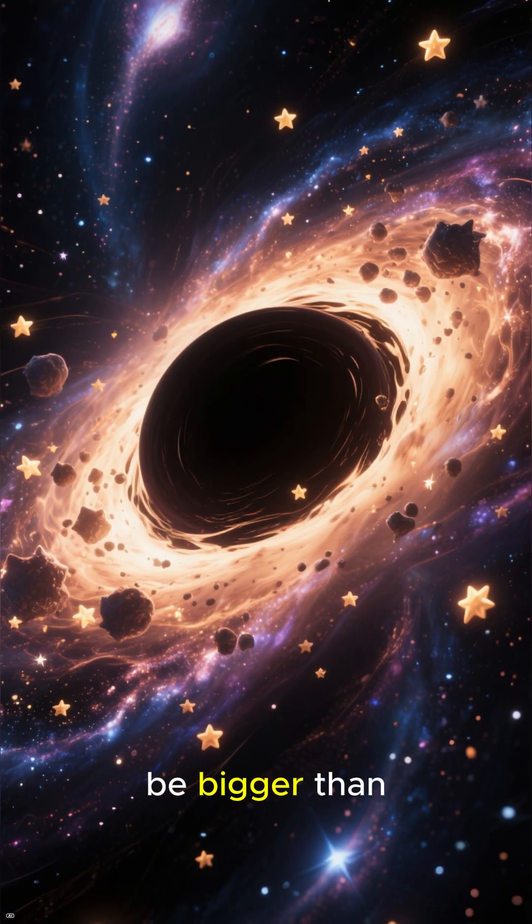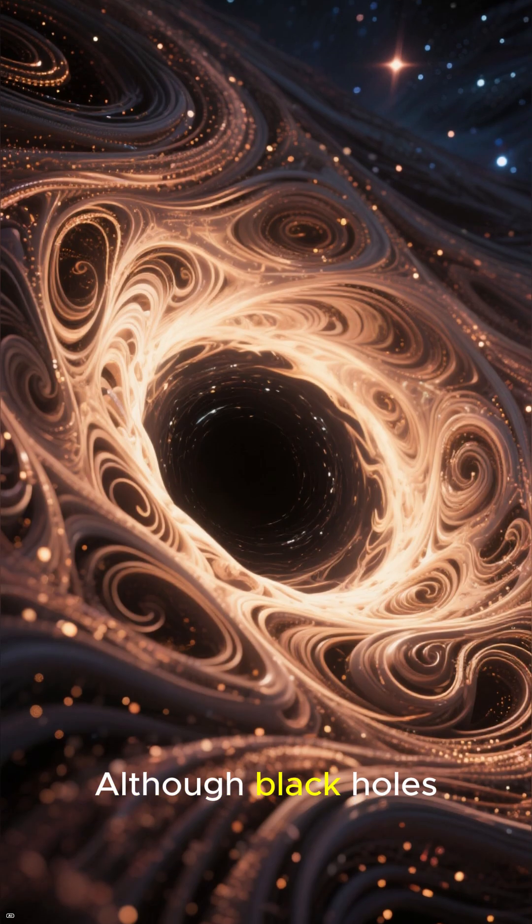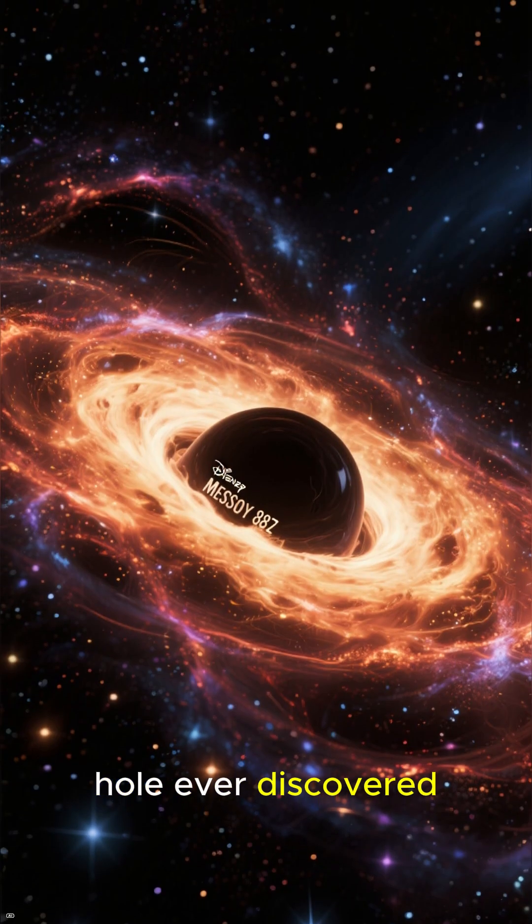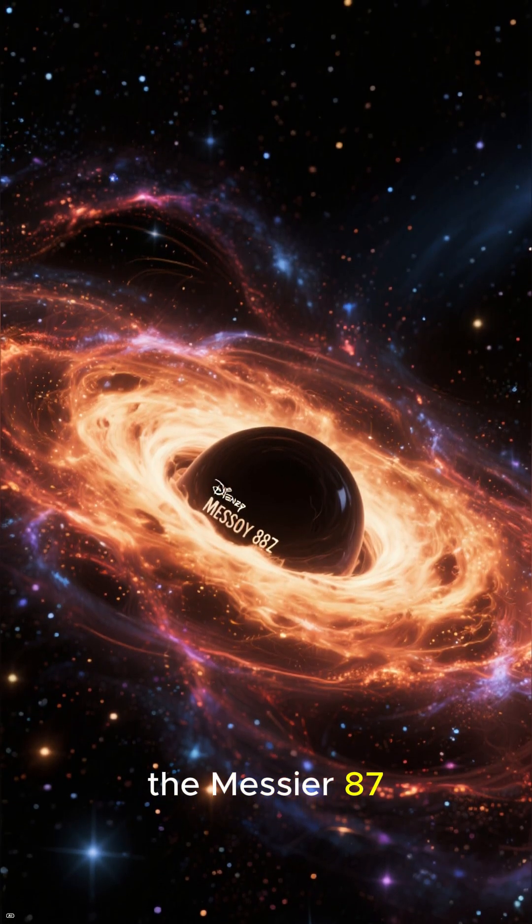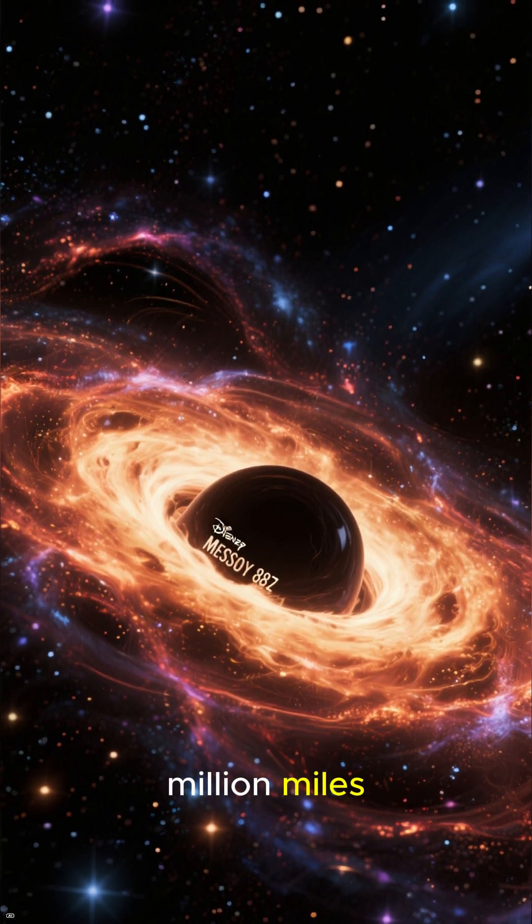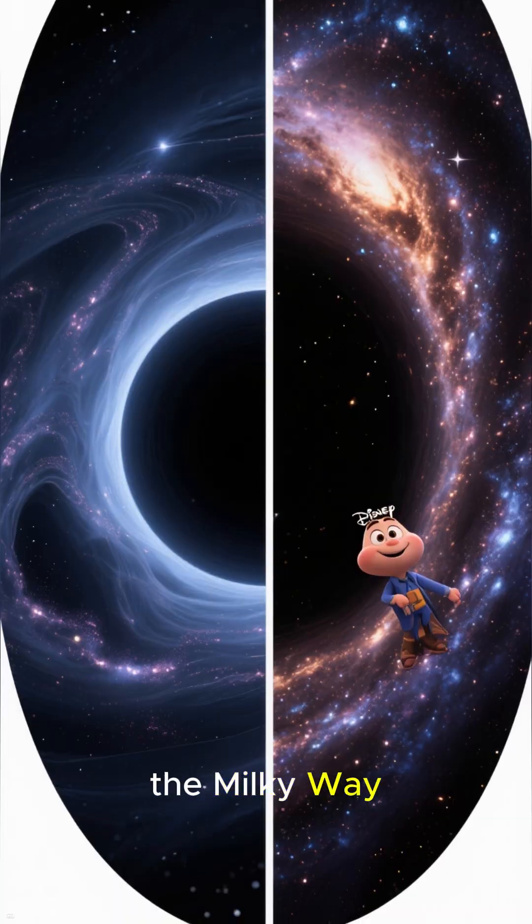Number 3. Black holes can be bigger than the size of our galaxy. Although black holes are incredibly dense, they can have a radius of many miles. The largest black hole ever discovered is located in the center of the Messier 87 galaxy. It has a radius of 395 million miles, which is larger than the size of our entire galaxy, the Milky Way.